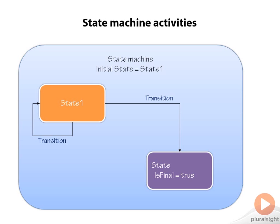We also have the notion of a final state. This is mechanical — it lets the state machine activity know that once we enter that state, it's time for the state machine itself to be complete. In the toolbox, you can drag a state machine on, add states to it, and you even have a special final state activity, which is just an activity whose property 'is final' is set to true.